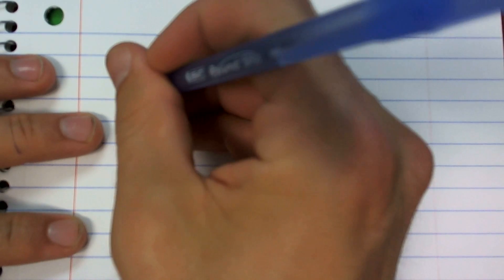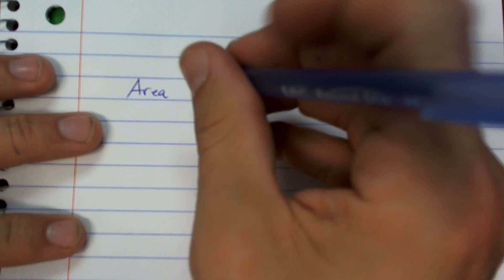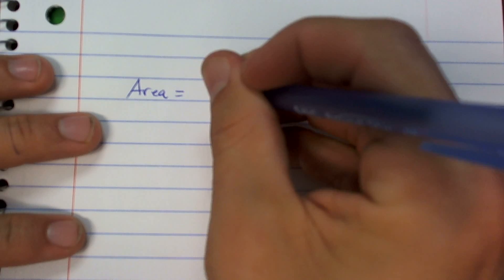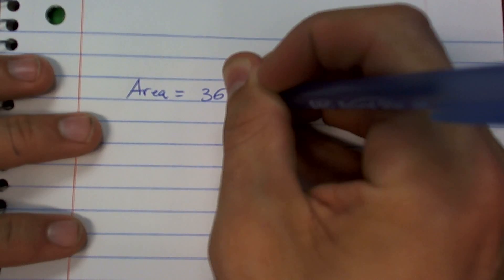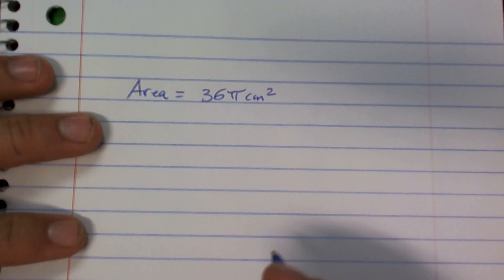So right now it says the area of a disk is 36 pi centimeters squared. So a couple things to do just to kind of help you out.